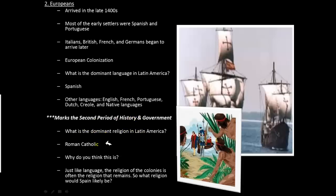This period of European arrival marks the second period of Latin American history and government. The dominant religion in Latin America is Roman Catholicism, for the same reason Spanish is the dominant language — it was the religion of Spain and Portugal, the countries that colonized most of Latin America. When European powers took over new lands, they killed or enslaved indigenous people and converted them to Christianity, causing them to lose many of their native religions and customs.